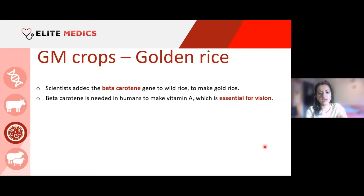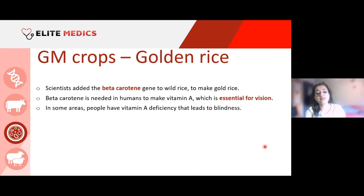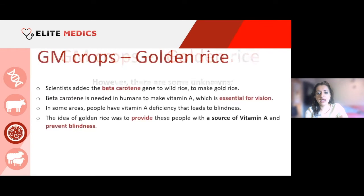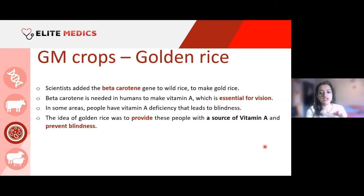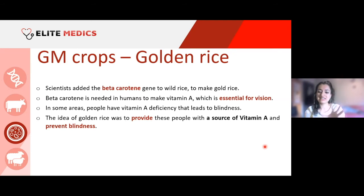Scientists added the beta-carotene gene to wild rice to make golden rice. Beta-carotene is needed in humans to make Vitamin A, which is essential for good vision. In some areas, significant Vitamin A deficiencies can lead to blindness. The idea was to create rice very rich in Vitamin A, particularly for populations in poor areas without access to vitamin supplements, providing a staple food containing Vitamin A to prevent blindness.